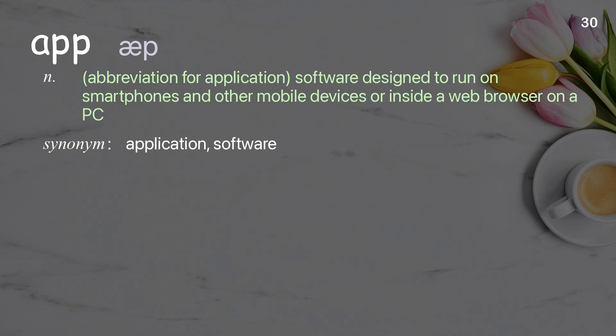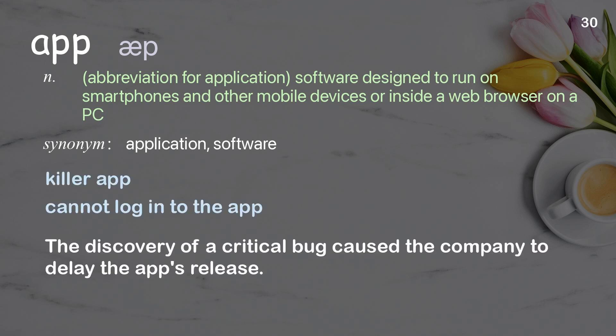App: Abbreviation for application; software designed to run on smartphones and other mobile devices, or inside a web browser on a PC. Examples: Killer app. Cannot log into the app. The discovery of a critical bug caused the company to delay the app's release.